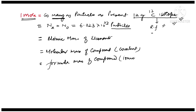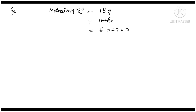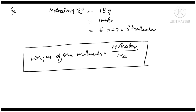For example, the molecular mass of water is 18 grams. So if we have 18 grams of water, it means we have one mole of water, and this 18 grams of water will contain Avogadro's number of molecules. What is the weight of one molecule? The weight of one molecule is equal to molecular mass divided by Avogadro's number — that gives you the weight of one molecule.